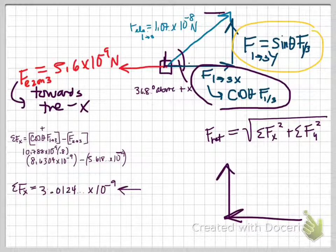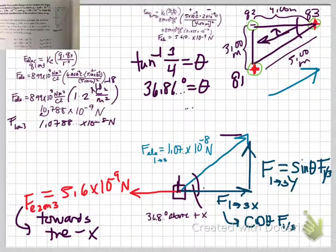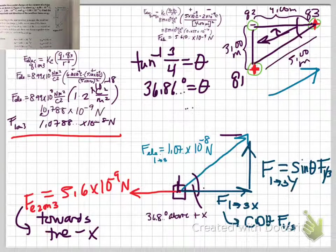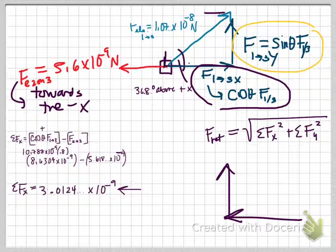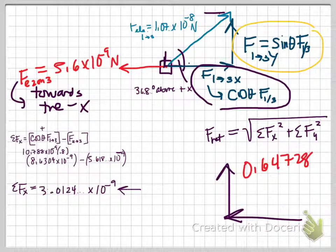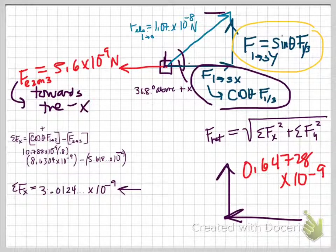It's going to be sine times... It's going to be sine of the 36.8698. Sine of that number gives us 0.6 times 1.0788. I'm going to leave my scientific notation uncorrected for the moment, because I suspect it's going to come out in the wash. 6.4728 times 10 to the negative 9th up, and 3.0124 times 10 to the negative 9th that way.